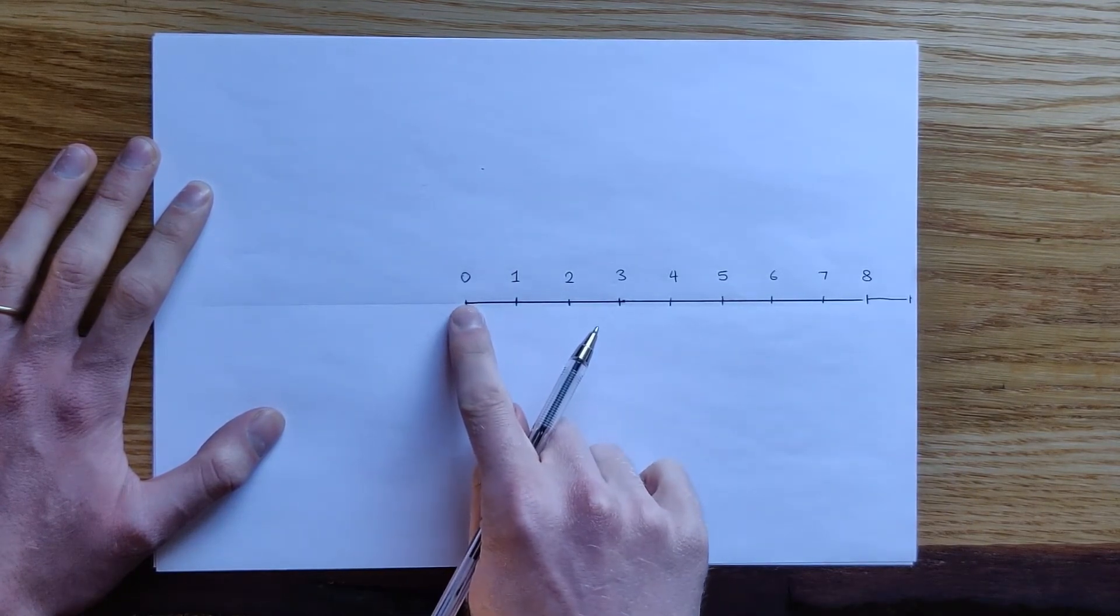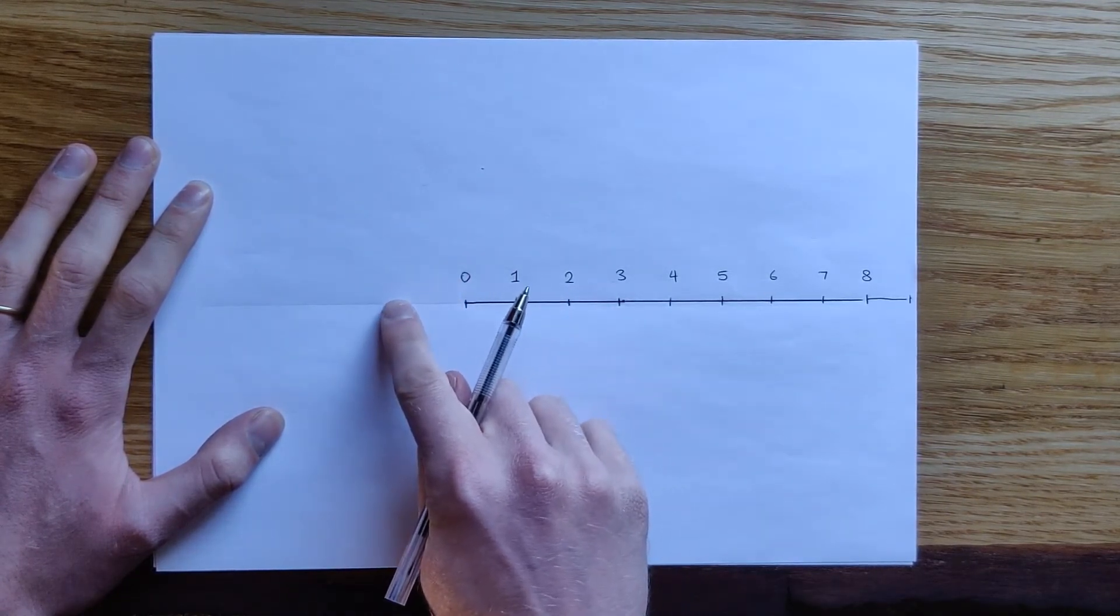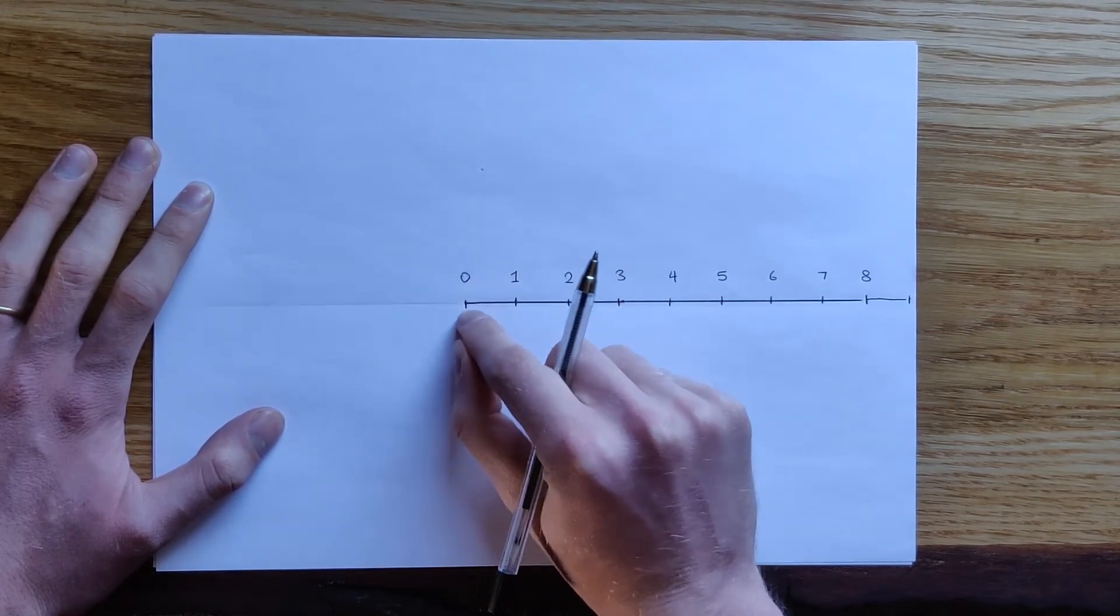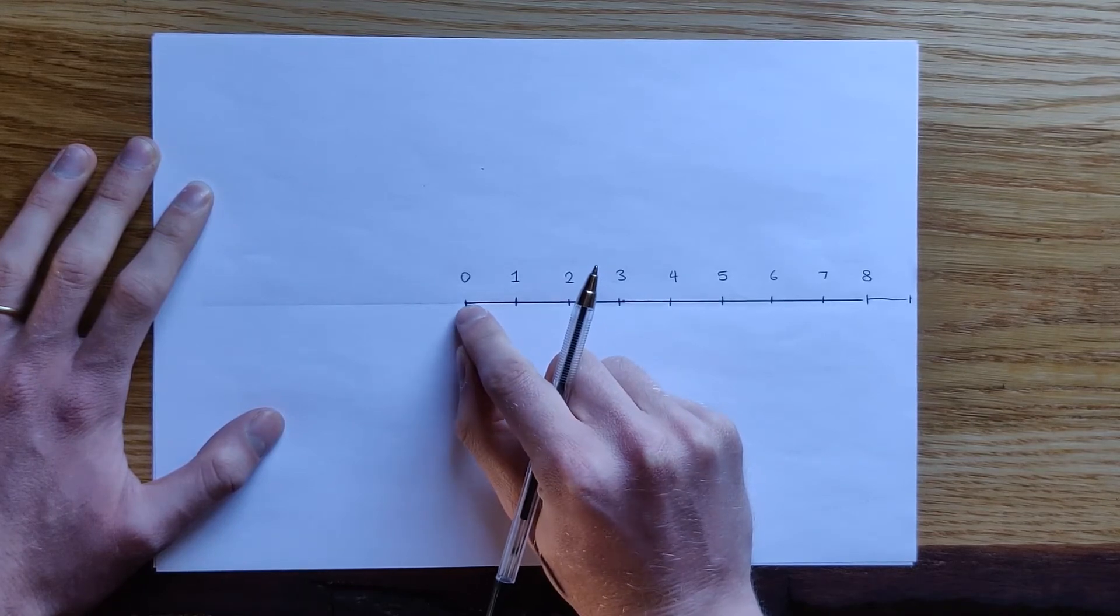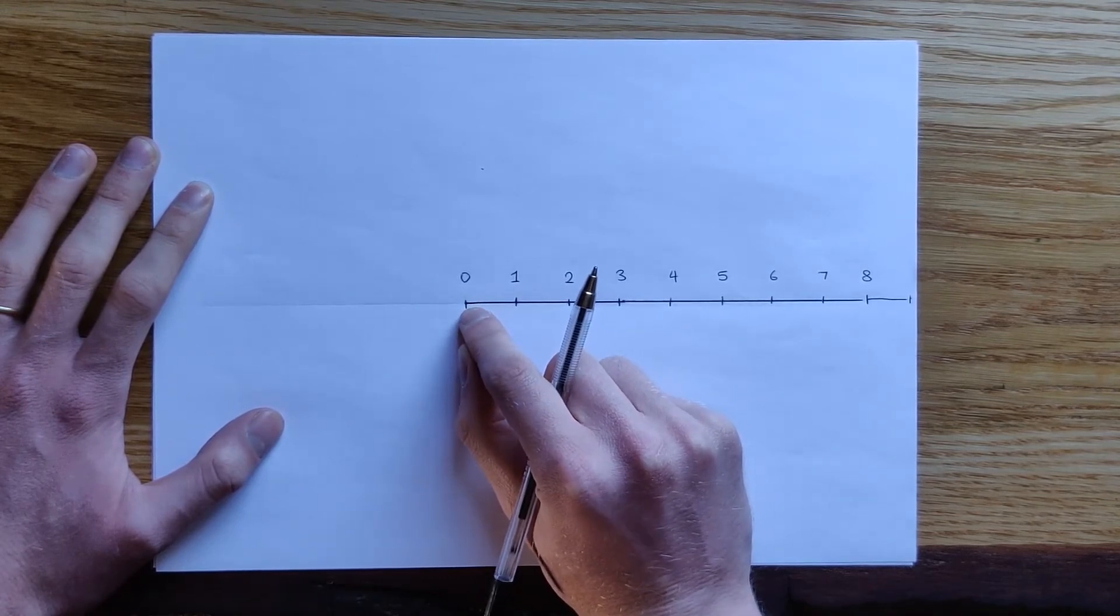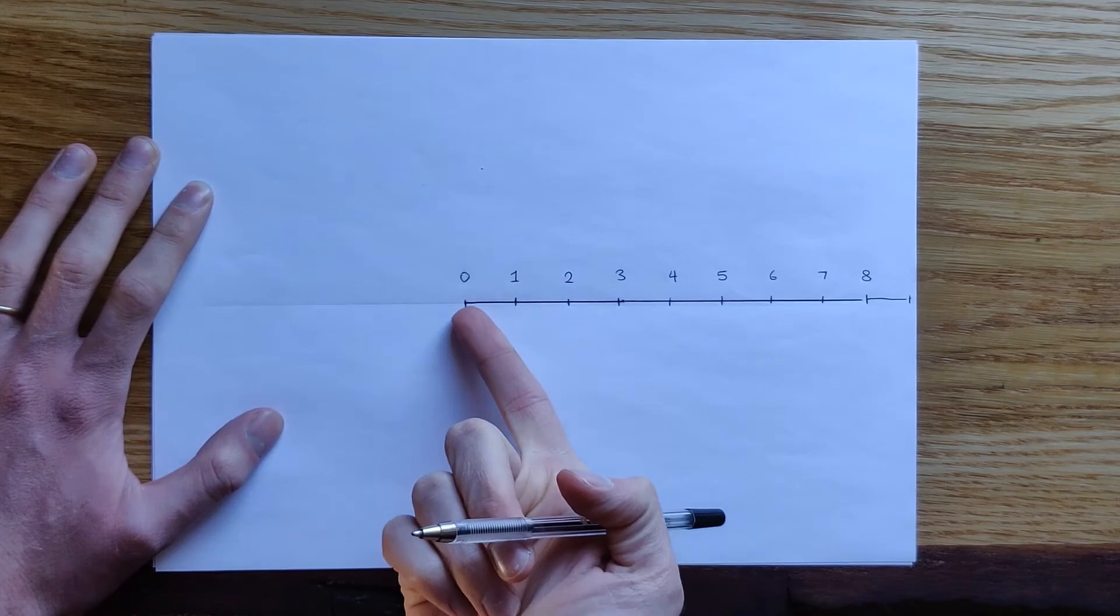But let's say we wanted to go less than one. It seems odd to go to a number less than zero, because how could you have an amount of things that's less than zero?